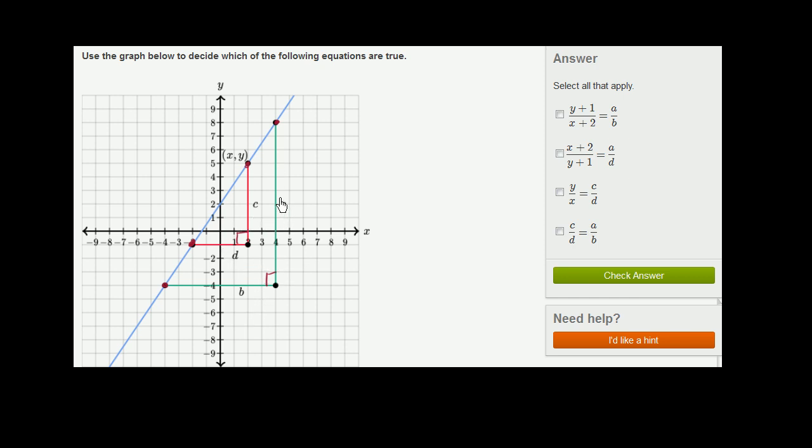And because they're all similar, the ratio between this vertical side and this base right over here is always going to be the same. So for example, we know that the ratio of a to b is going to be equal to the ratio of c to d.